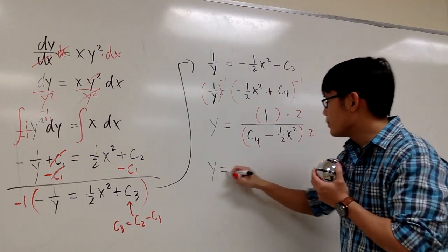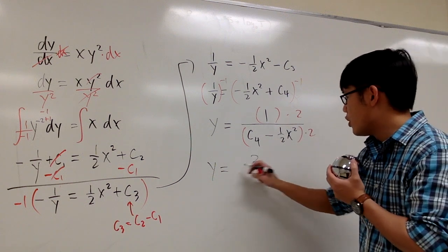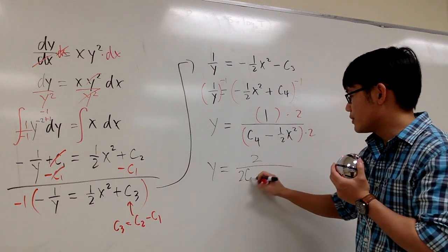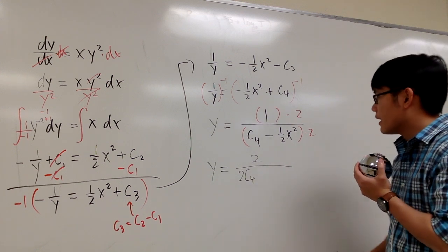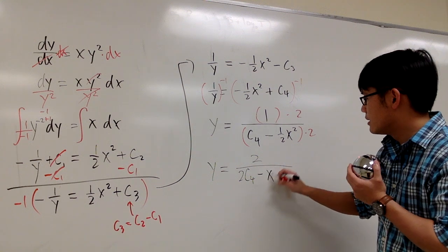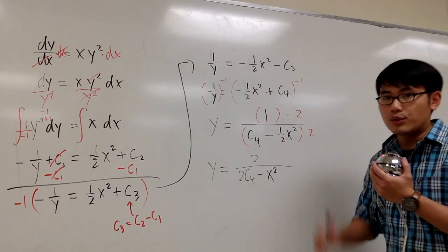And you see y? It's going to be 2 on the top over 2 times c4. Let me just put it as 2 times c4 for now. 2 times 1 half is 1, but minus x squared. That's all we have.